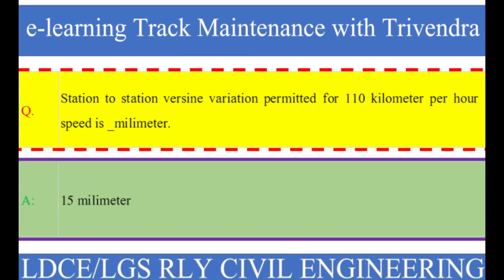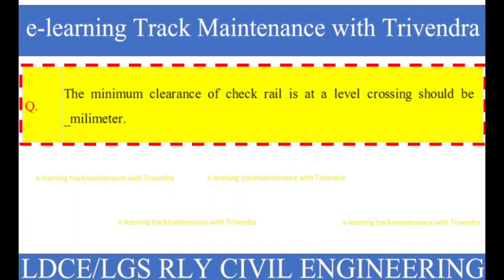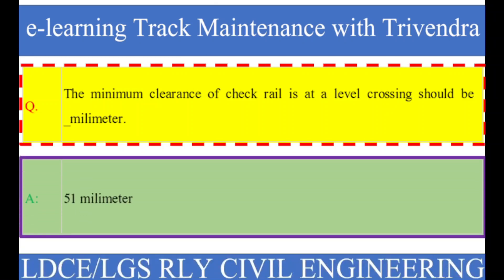Question number 65: The minimum clearance of check rail at a level crossing should be how many millimeters? The right answer is 51 millimeters.